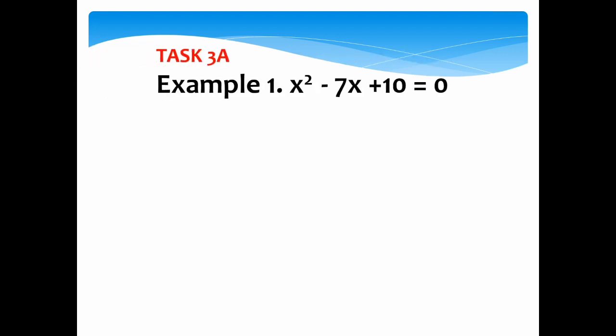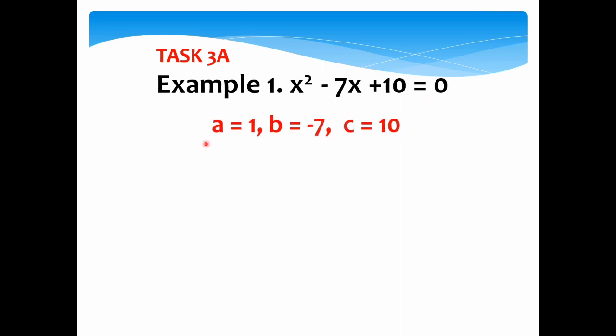We are given Task 3a, which is a line in our module. We need to find the value of a, b, and c. Given the quadratic equation x squared minus 7x plus 10 equals 0, the value of a is 1, b is equal to negative 7, and c is equal to 10.